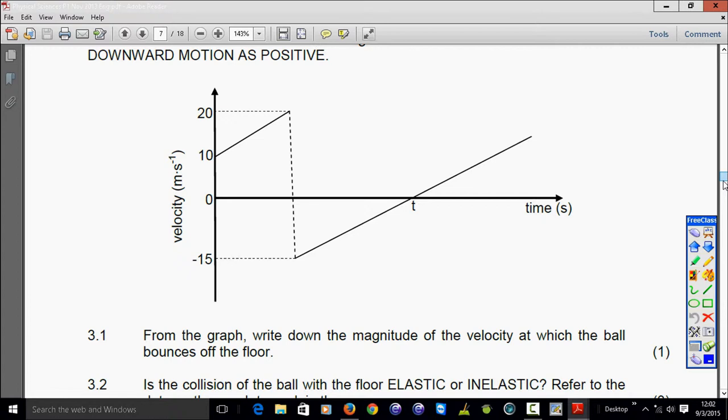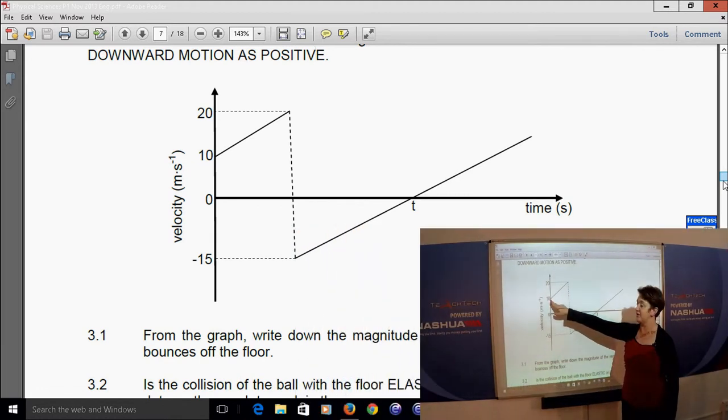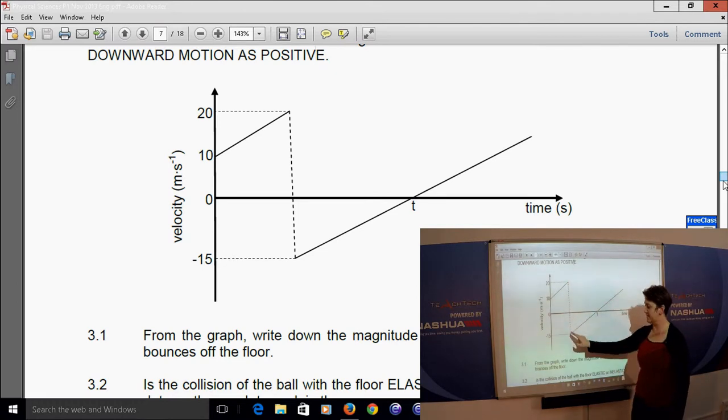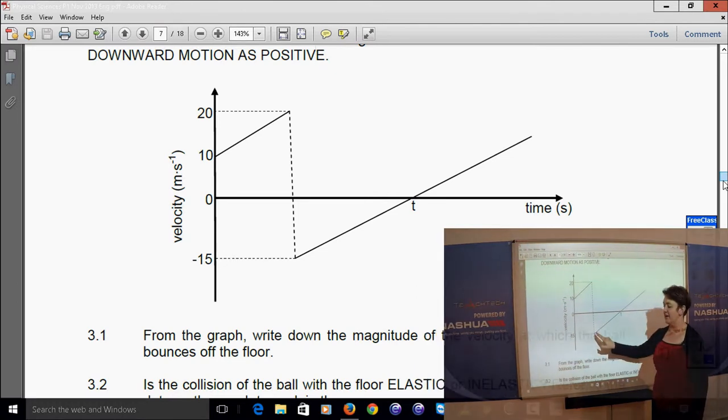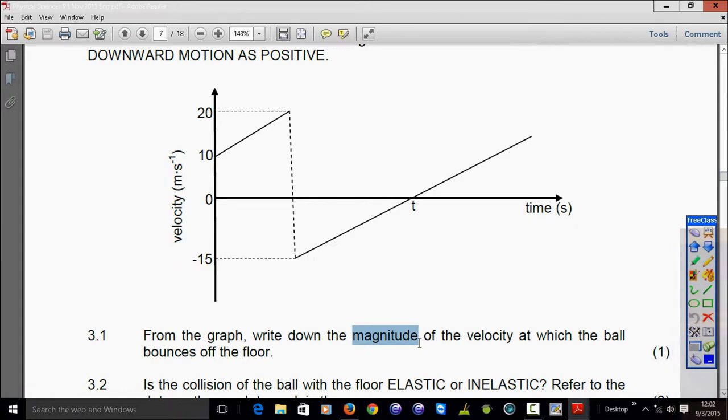First of all from the graph write down the magnitude of the velocity at which the ball bounces off the floor. So let us examine this graph. The initial velocity is 10 so it means that will be the velocity with which it is thrown. Then there it will hit the ground 20. But this will be the indication of the velocity of the ball when it leaves the ground. So now the question says magnitude. So we won't use the negative because the negative refers to direction. We will only say 15 meters per second.